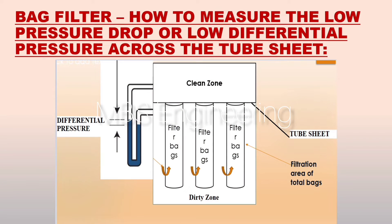Next, we are going to discuss how to measure the low pressure drop or differential pressure across the tube sheet in the bag filter. Please refer to the schematic layout for better understanding. The pressure drop of the system — fabric filter — is determined by measuring the difference in total pressure at two points, usually the inlet and outlet duct of the baghouse, or tube sheet dirty and clean air side.